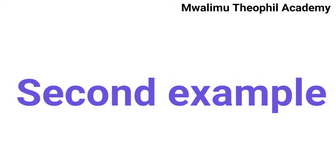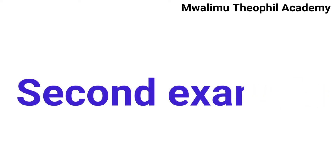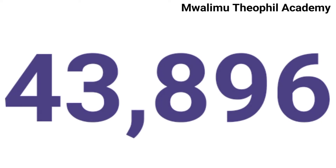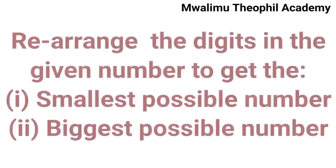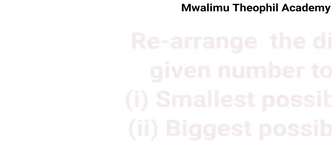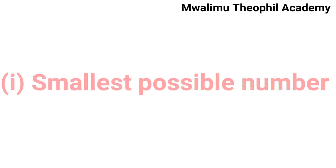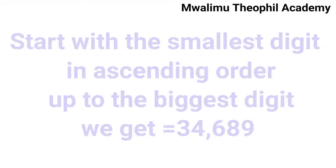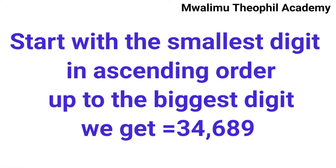Let us see a second example. In this example, we are given a number made up of five digits, read as 43,896. We are asked to rearrange the digits to get the smallest possible number and the biggest possible number. To get the smallest possible number, you have to start with the smallest digit to the largest digit. After rearranging in this way, we get 34,689.